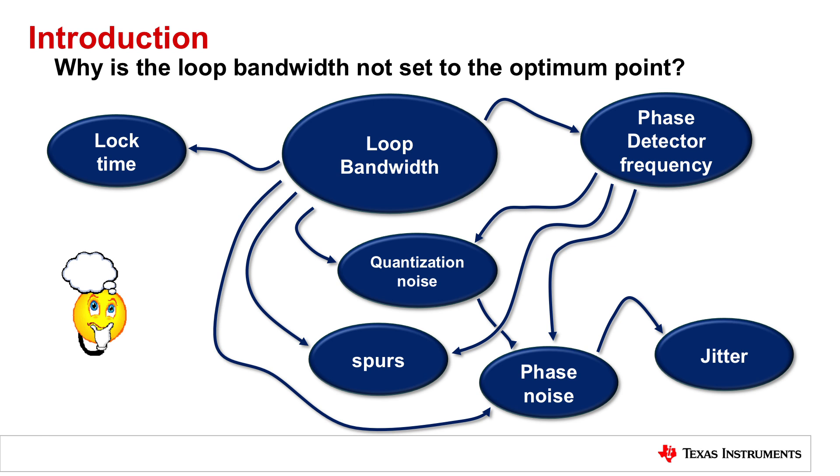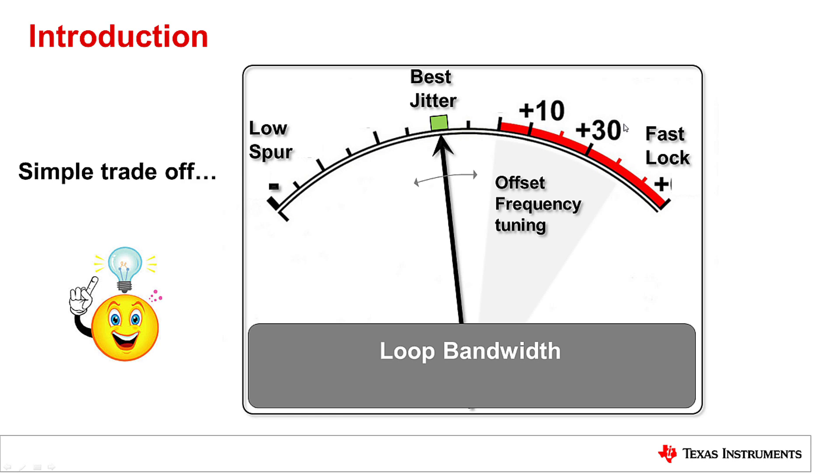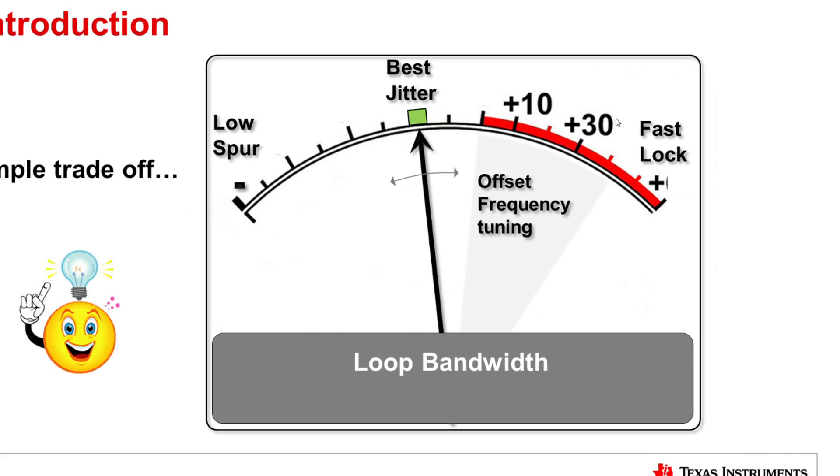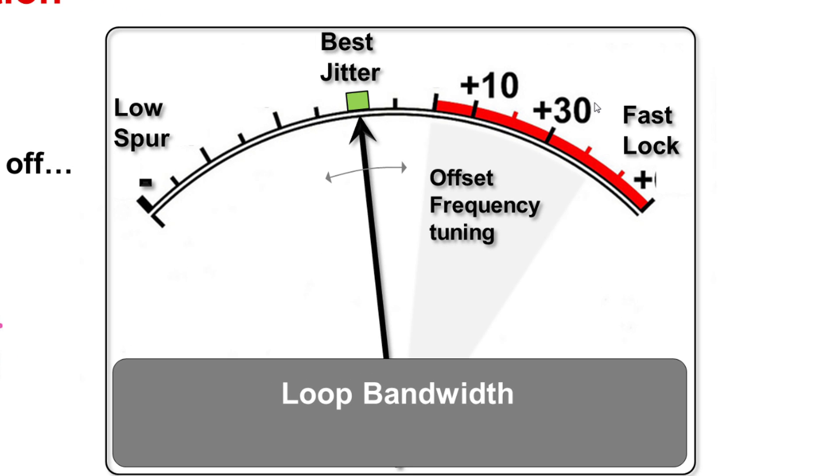I thought I'd come up with a simpler version here for the purpose of this video. If I reduce the loop bandwidth, I'm going to reduce the spur that live inside that loop. If I increase my loop bandwidth, I am actually going to reduce my lock time. There's going to be a region right in the middle where the noise of the PLL and the noise of the VCO intersect, and setting up my loop bandwidth in this area is going to provide me the best jitter. Finally, in between the best jitter and the fastest lock, I can favor some offset frequency to others to get better phase noise at specific spot frequencies.